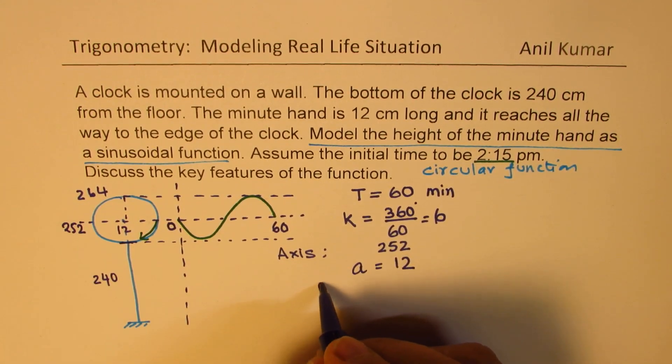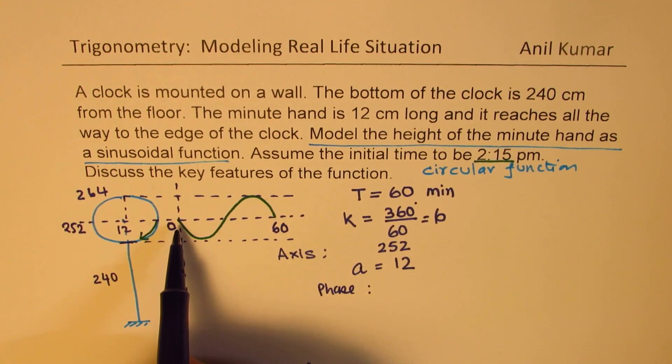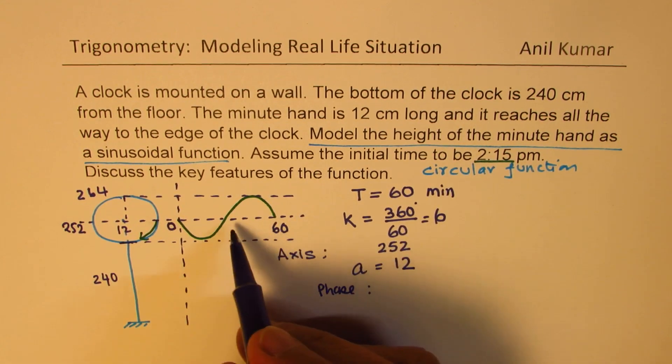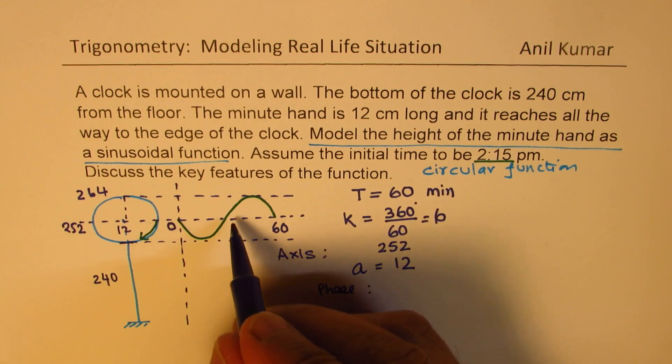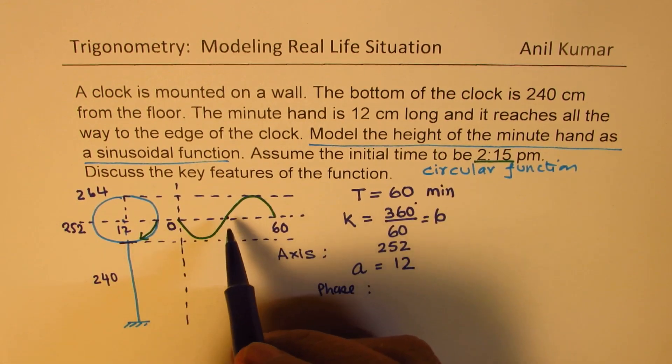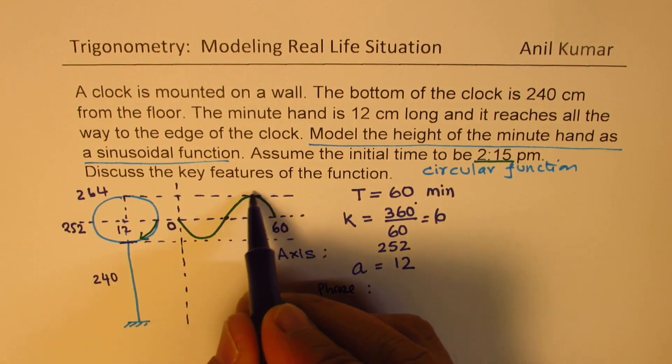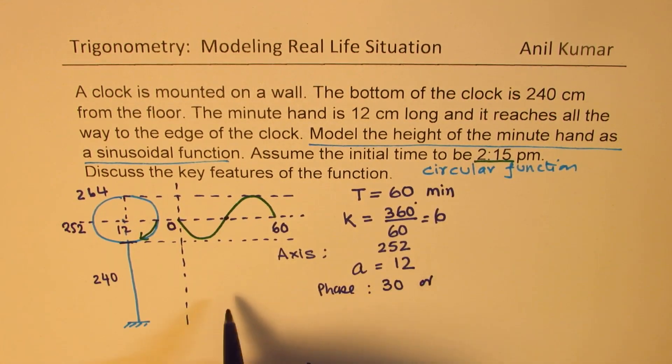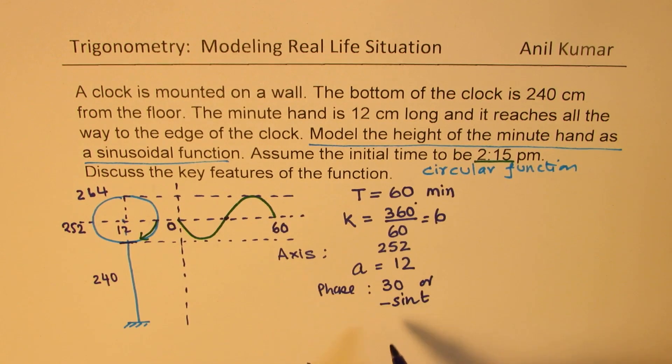Now, we'll talk about phase shift. As far as the phase shift is concerned, you can see that the sinusoidal wave goes negative. You can say half the cycle, 30 minutes. You could say that also, basically, because the wave actually starts from here. So, you can say 30 minutes, or we can use minus sign t, since it goes negative. I think with this, we can write down our model.